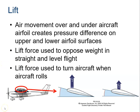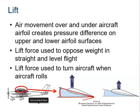The angle of attack is calculated by drawing a line representing the direction of airflow and another line representing the chord. The angle between those two lines is called alpha, or the angle of attack. Generally, the greater the angle of attack, the greater the lift — but that's only true up to a certain extent.